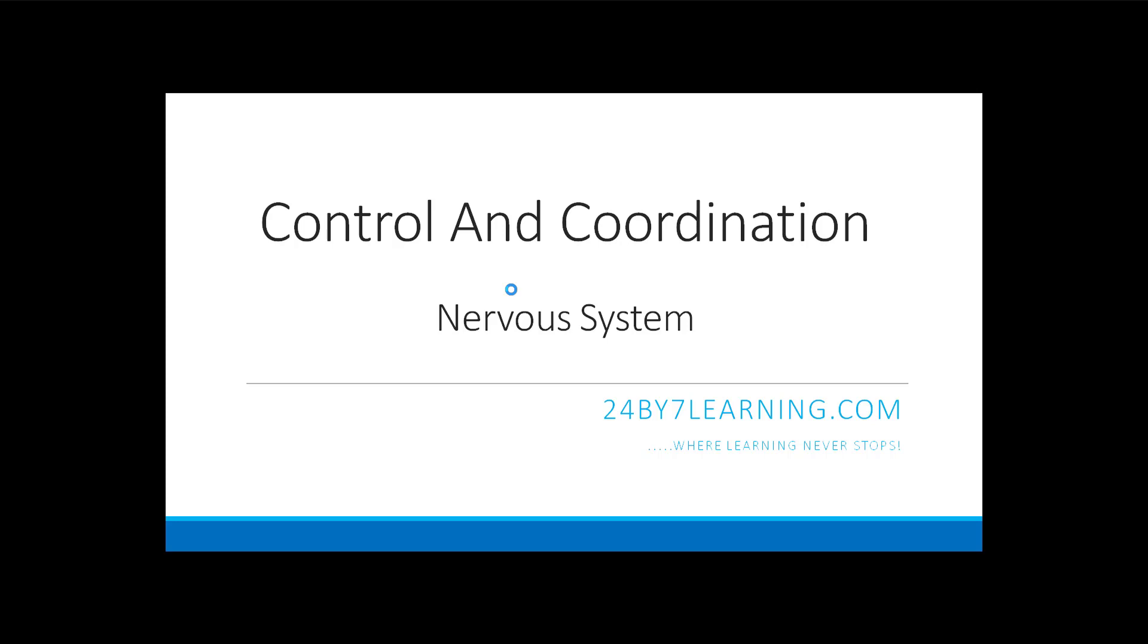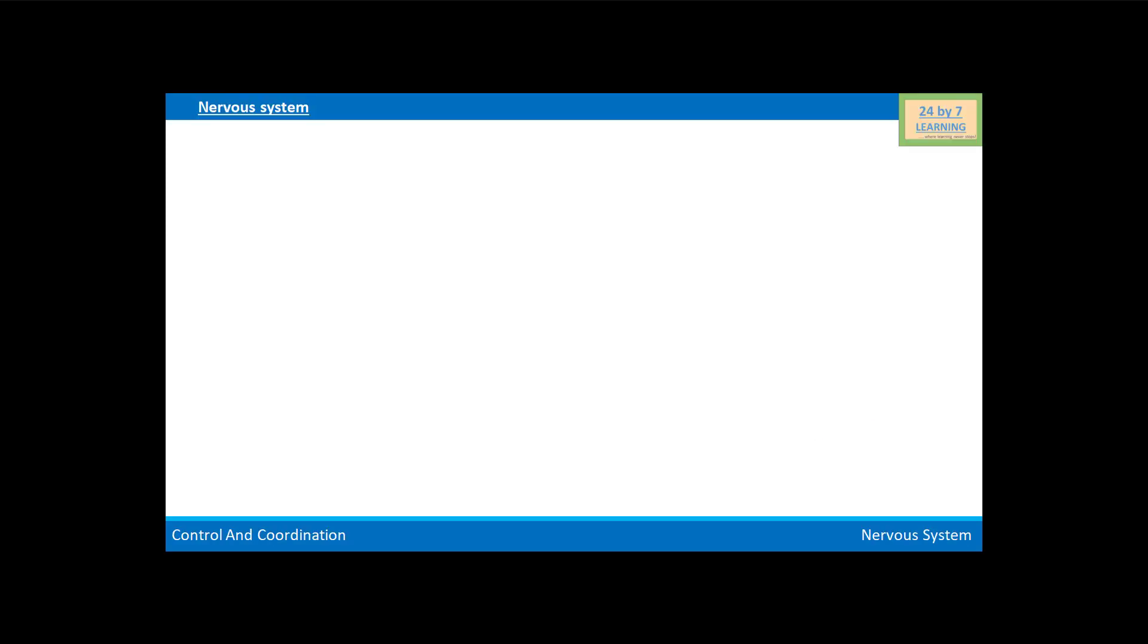Hello students, in this lesson we will know about control and coordination. In this video we will discuss the nervous system. The system which receives the stimulus, transmits it to the other parts of the body, and shows their corresponding effects is known as the nervous system.